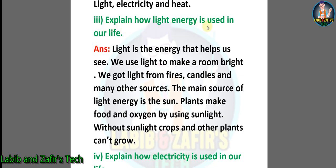Answer: light is the energy that helps us see. We use light to make a room bright. We get light from fires, candles, and many other sources. The main source of light energy is the sun. Plants make food and oxygen by using sunlight.